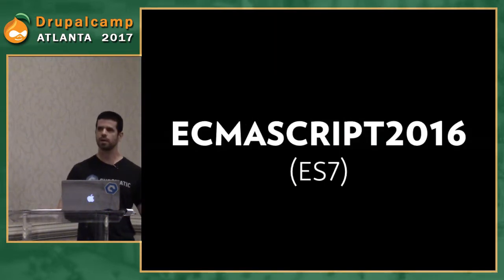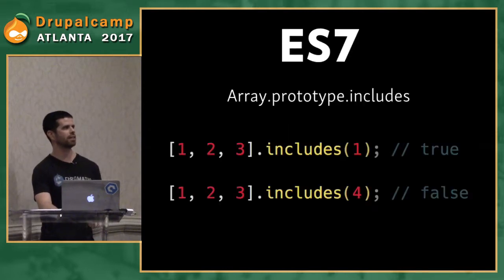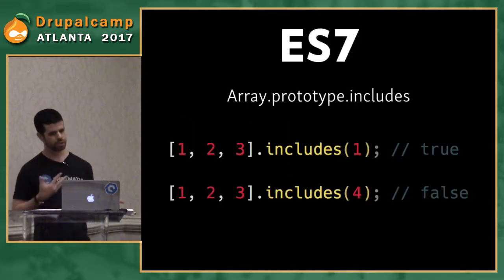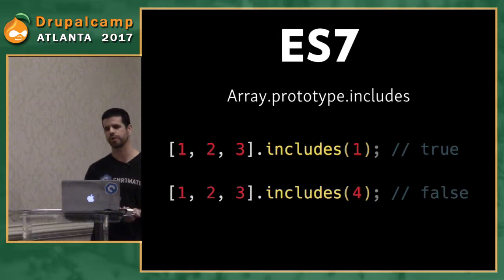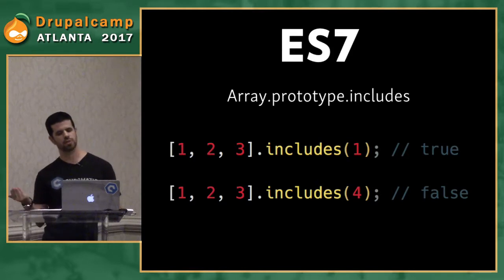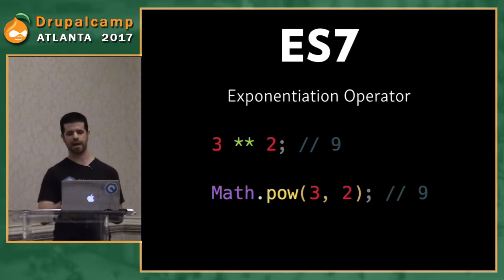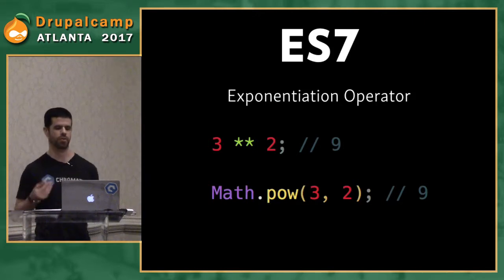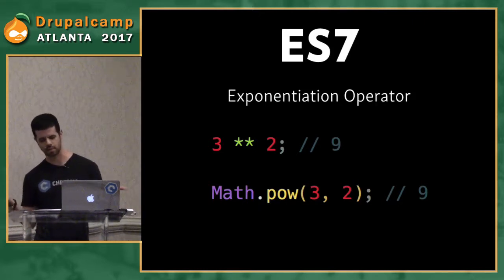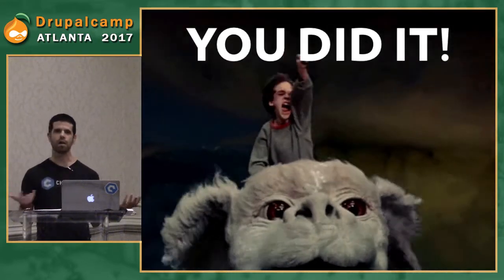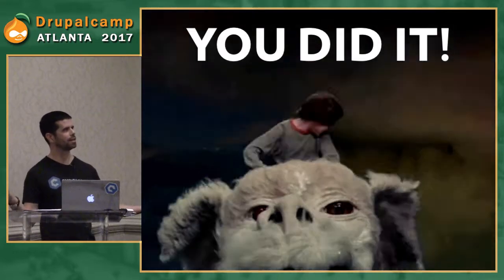We're going to learn ES7 first. ES7 has a new Array Prototype Includes method — pretty straightforward. Does array [1,2,3] include 1? True. Does it include 4? False. We also have a new exponent operator: instead of math.pow(3,2) to get 9, you just do 3**2 equals 9. And guess what? You've already learned all of ES7. Good job.